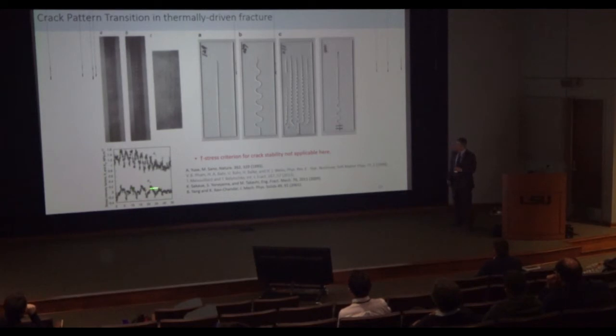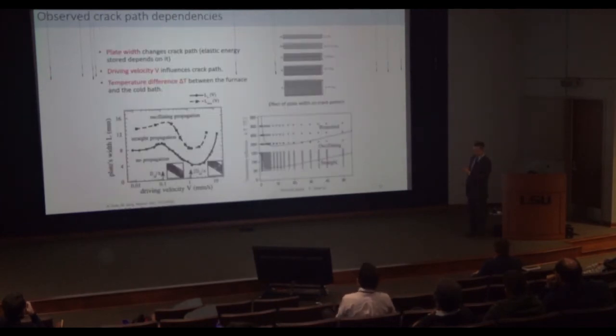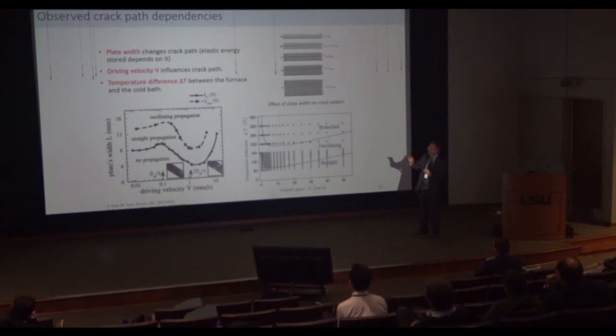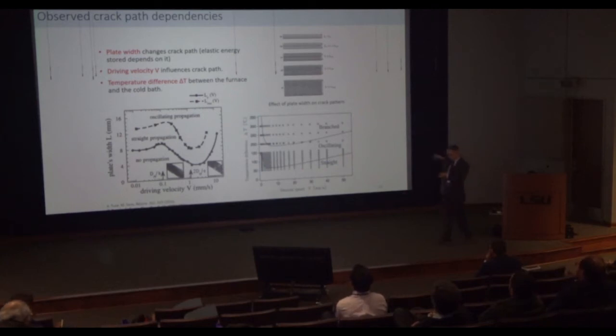And when they show that the T stress criteria for cracking stability does not play a role here. You do have these oscillations in K1 and K2, stress intensity factors, that kind of motivate why this thing oscillates around. But in terms of behavior, this is very sort of organized. It's not random. You have plate width that changes the behavior. If you have wider plate, you will get different behavior for a certain driving velocity. The driving velocity influences the behavior and the temperature difference between the top, the water also changes the behavior.